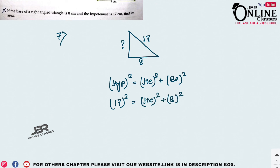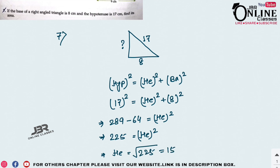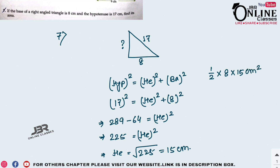So 17² = height² + 8², meaning 289 = height² + 64. Therefore height² = 289 − 64 = 225, so height = 15 cm. Area = ½ × base × height = ½ × 8 × 15 = 4 × 15 = 60 cm².